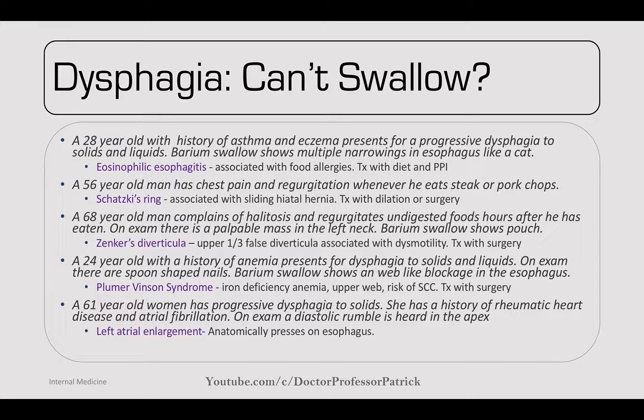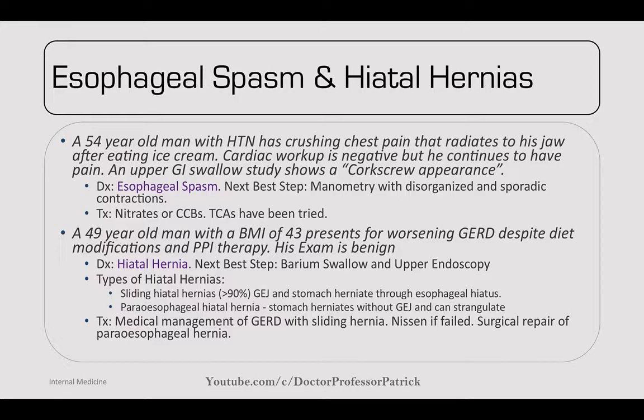Moving into esophageal spasms and hiatal hernias — a 54-year-old with hypertension has crushing chest pain radiating to his jaw after eating ice cream. Cardiac workup is negative, but he continues to have pain. Upper GI swallow shows a corkscrew appearance — diagnosis is esophageal spasm. First rule out cardiac causes, then barium swallow and manometry, looking for disorganized sporadic contractions. Often initiated by cold foods or emotional stress. Treatment: nitrates and calcium channel blockers to relax the esophagus; TCAs have also been tried.